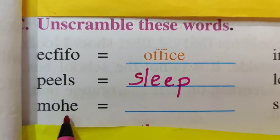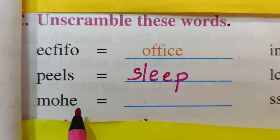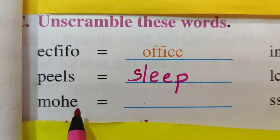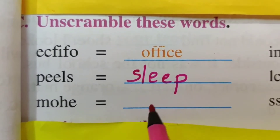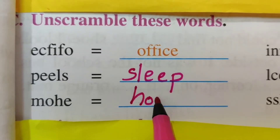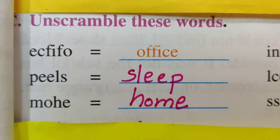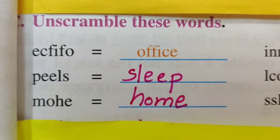Next: M-O-H-E. How to write the correct spelling? H-O-M-E — home.